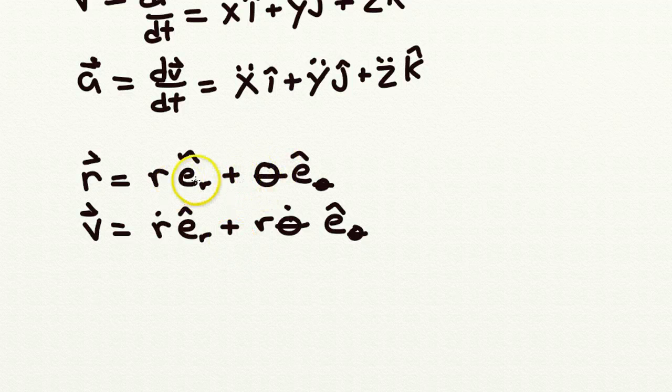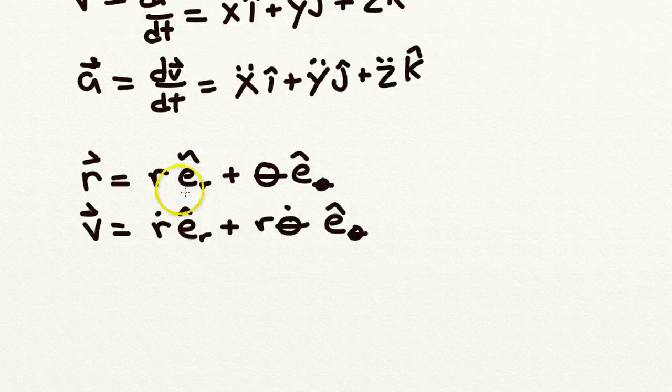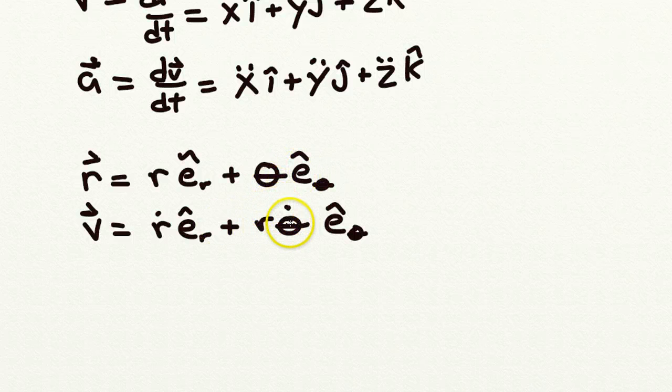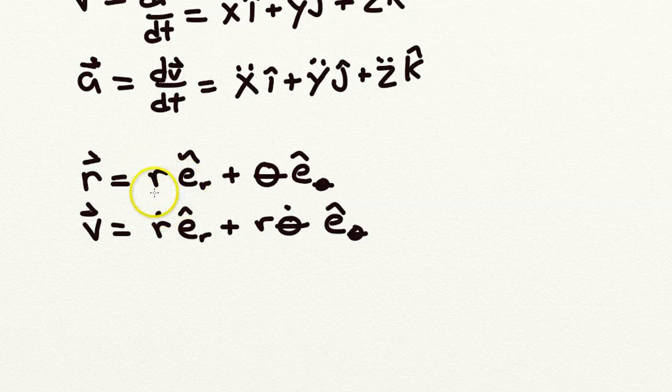So in this case, because these coordinate, the basis of this coordinate is not as simple as this i-hat, j-hat, k-hat, we get kind of these cross terms, and so the velocity depends, in each case, in the theta-hat direction case, depends not only on the rate of change of theta, but also on r itself, the magnitude of the distance from the origin.